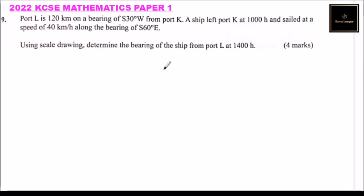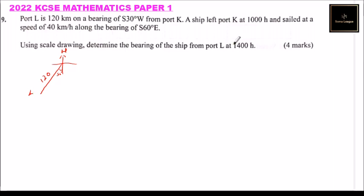When you are doing a scale drawing, you need to make a sketch first, then draw the actual drawing. So this is a compass. We are told that port L is 120 kilometers away, and the bearing is from South to the West — South 30 degrees West. So we draw an angle of 30 degrees there, and this 120 kilometers is where port L is.